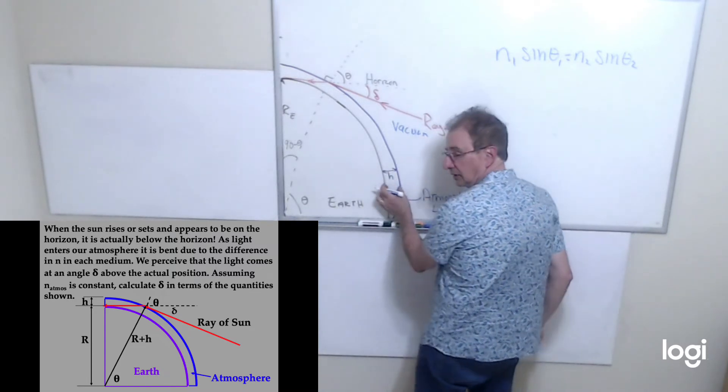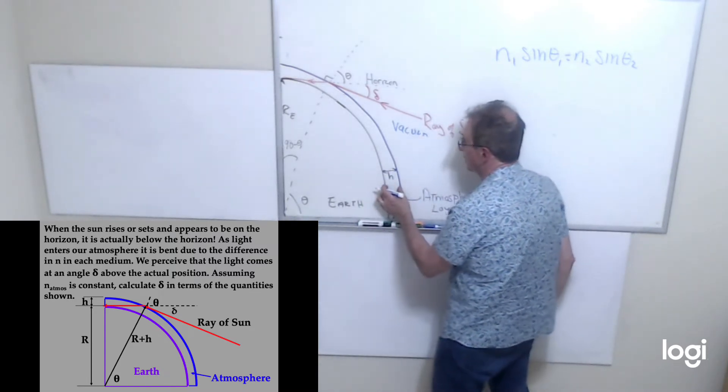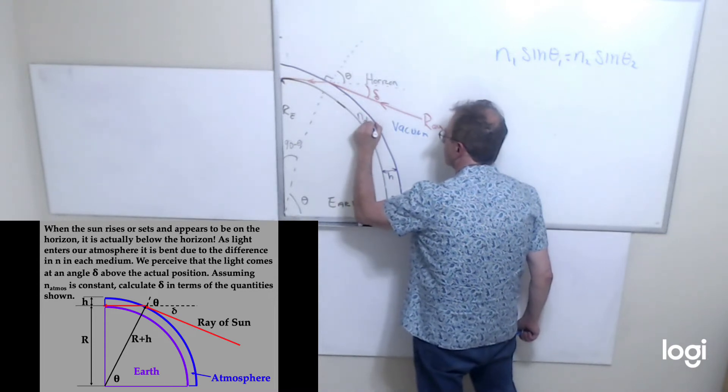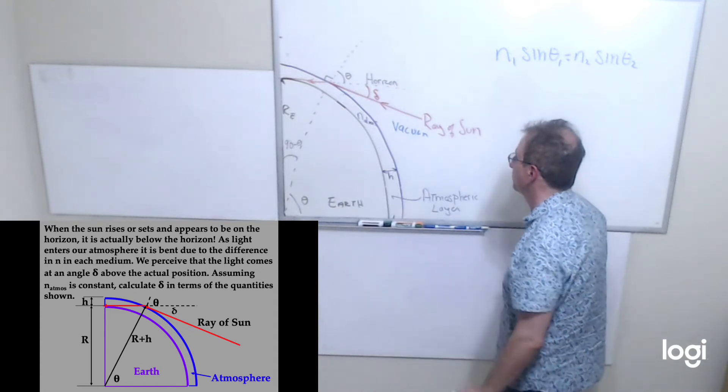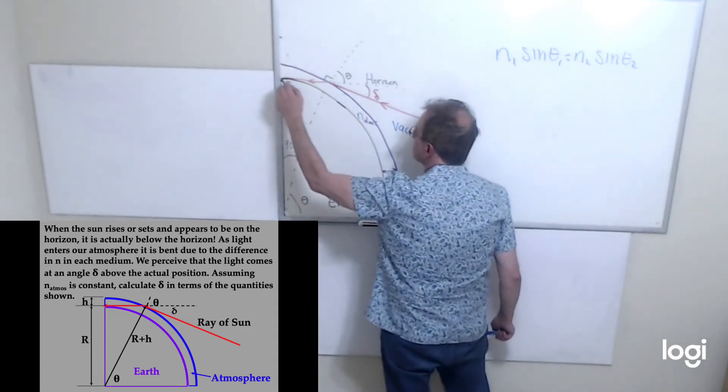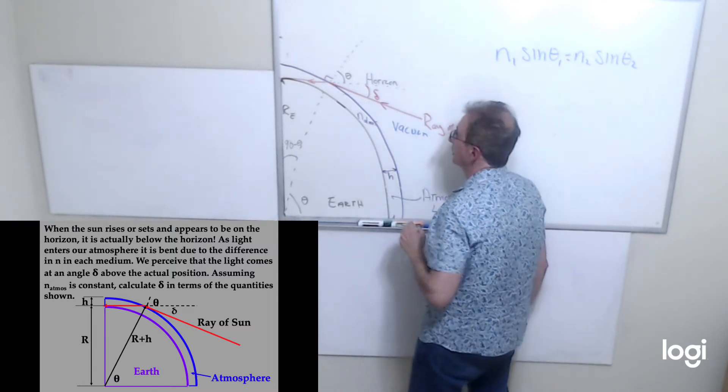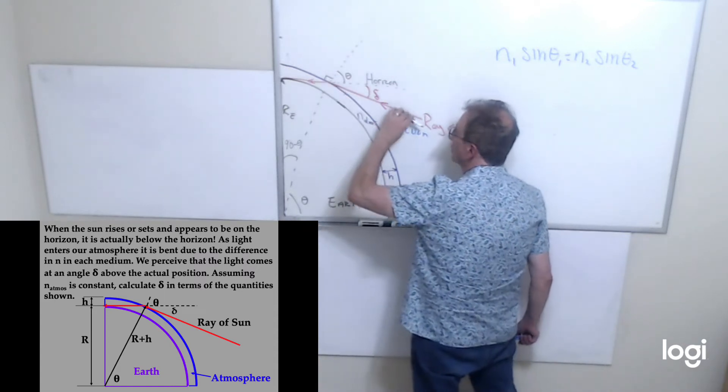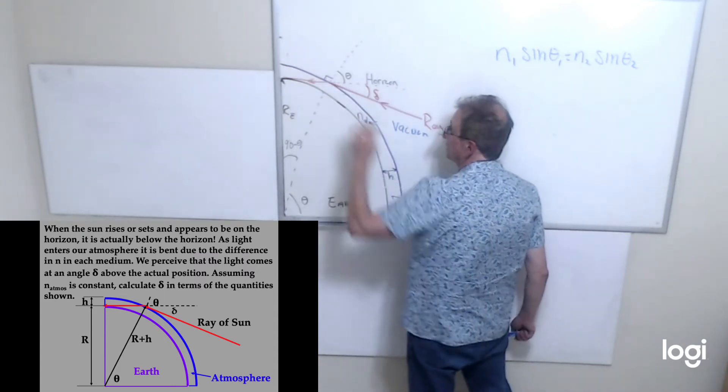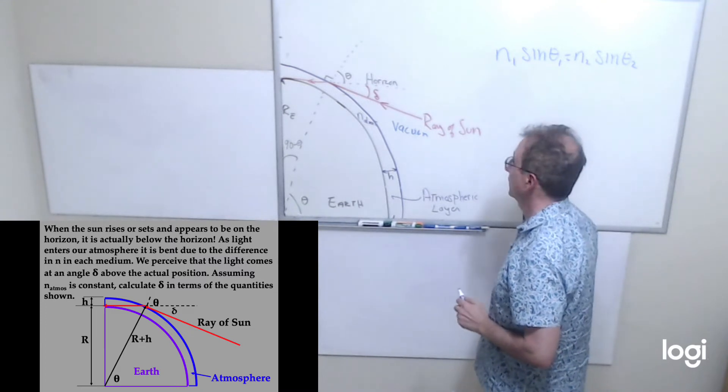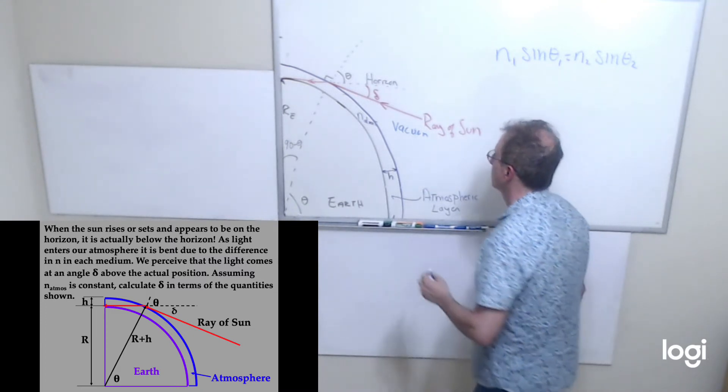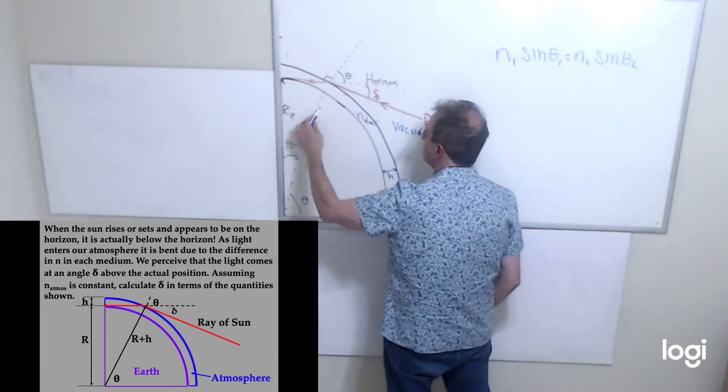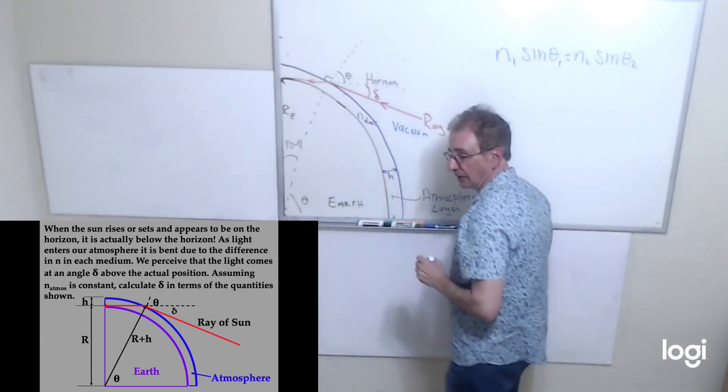The height of the layer of the atmosphere, we'll call H. And the index of refraction is n_atmos. So this dotted line is the horizon. This is light incident along the horizon. And this is the ray below the horizon. It gets bent because of Snell's Law. This line that you see here represents the normal to the surface of the upper atmosphere.